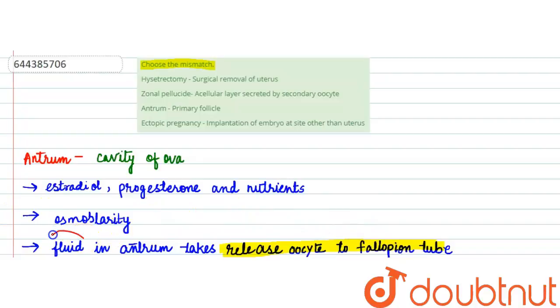So the fluid inside the antrum does the process of taking this oocyte to the fallopian tube. So we found that the correct option is the third one, that is the mismatch. Rest all are correct because hysterectomy is actually the surgical removal of uterus.